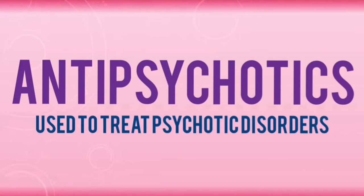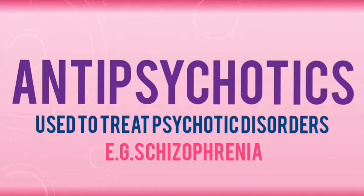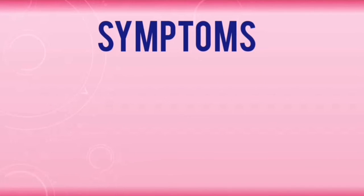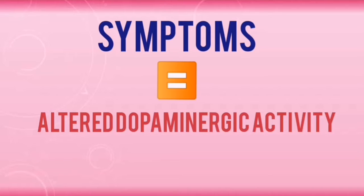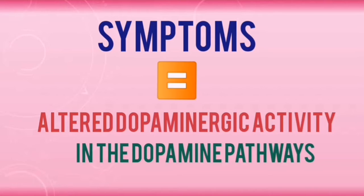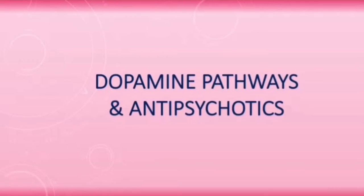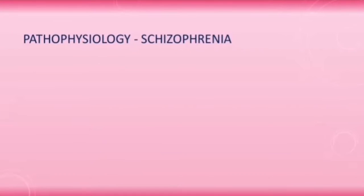Antipsychotics are used to treat psychotic disorders such as schizophrenia. The symptoms in schizophrenia are thought to be due to altered dopaminergic activity in the dopamine pathways of the brain. Let's start with the pathophysiology of schizophrenia.